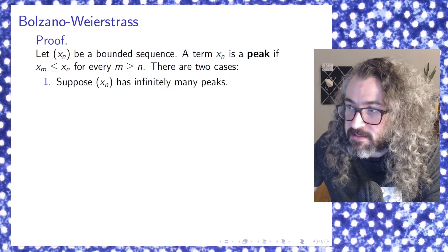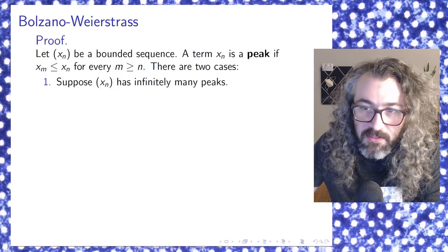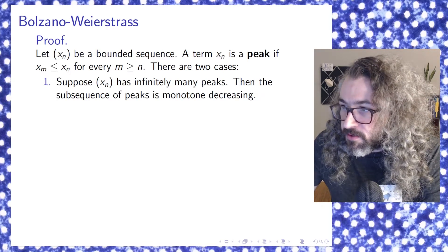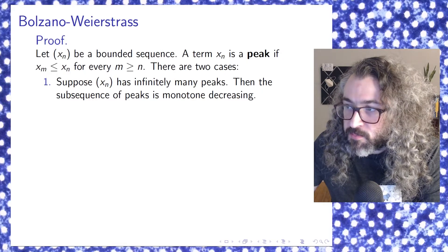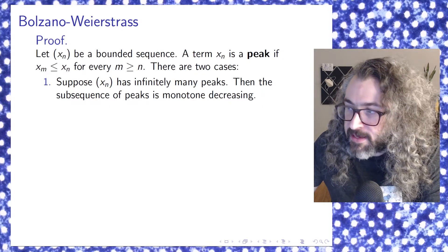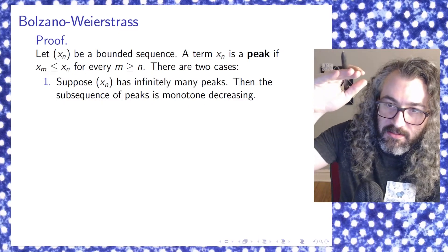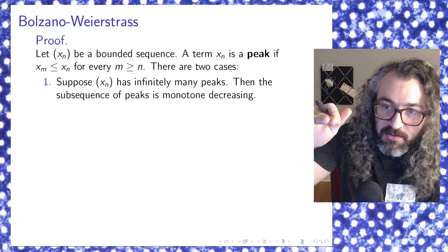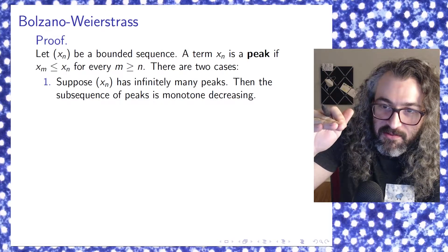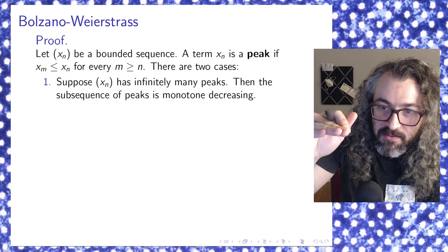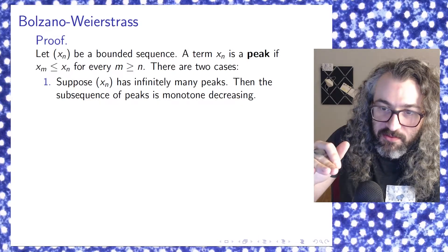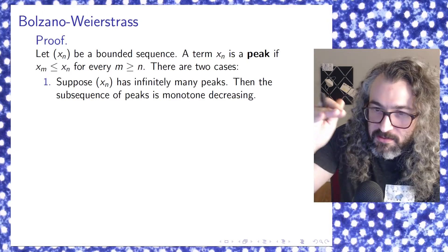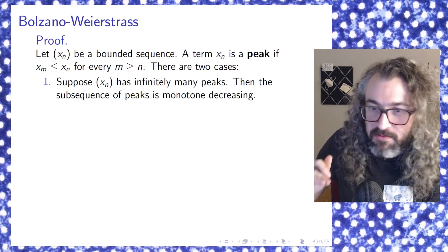The first case is that the sequence has infinitely many peaks — this is the easier case. In this case, we can take the subsequence of peaks, and that has to be monotone decreasing. Because if you've got a peak, the next peak has to be shorter, since the first peak was a peak so everything else is shorter. Then the next peak after that has to be shorter. And there are infinitely many peaks, so you get a sequence that's monotone decreasing.